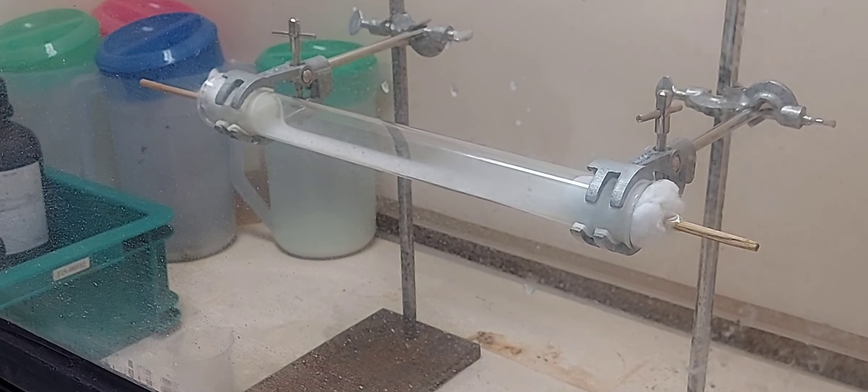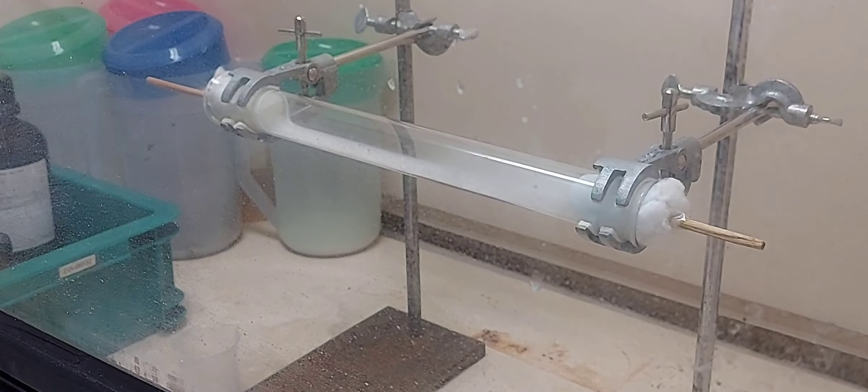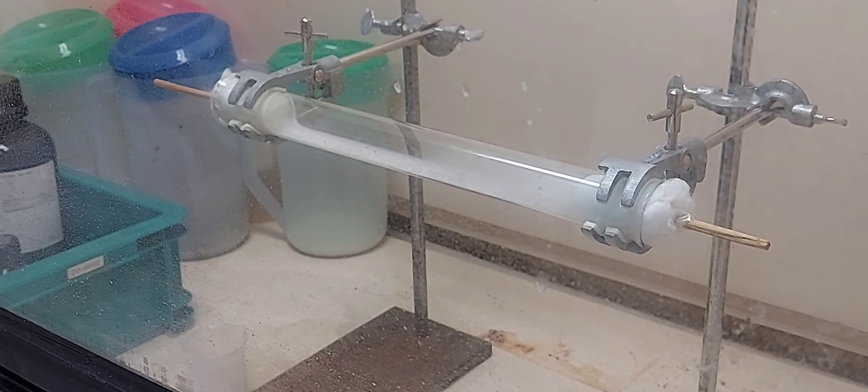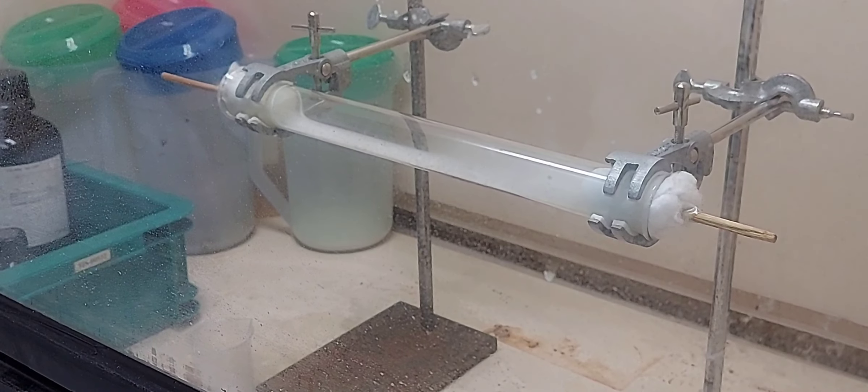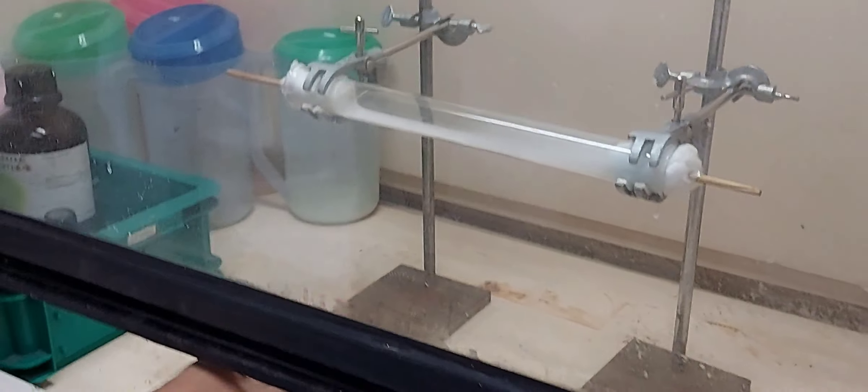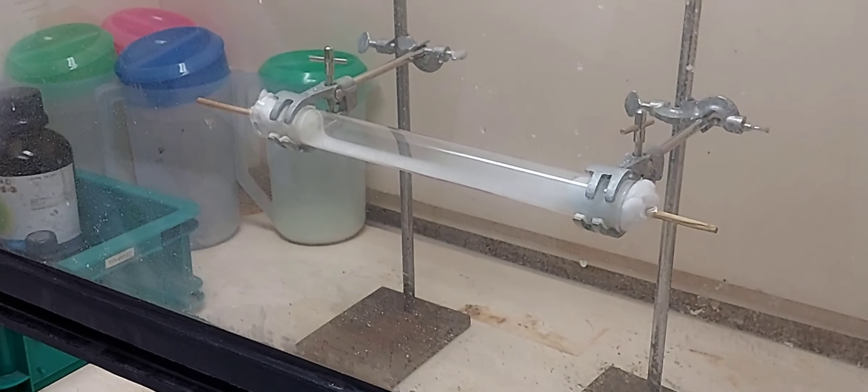So the white solid that you are seeing is ammonium chloride being formed. So which gases travel faster? The white fume, the white substance that you are seeing is actually ammonium chloride. So where did you see ammonium chloride first?